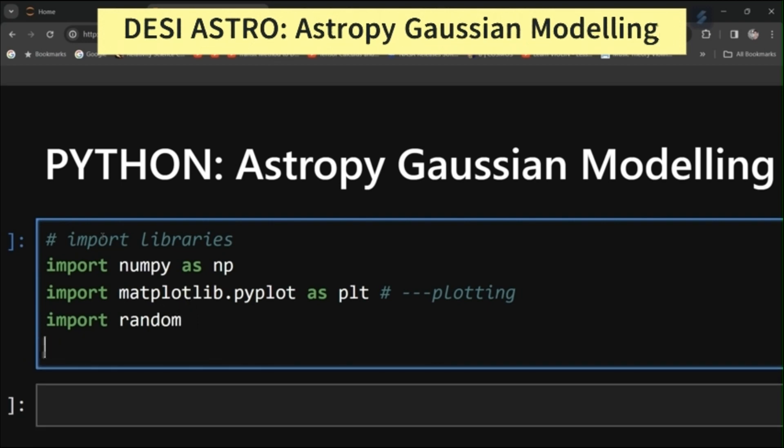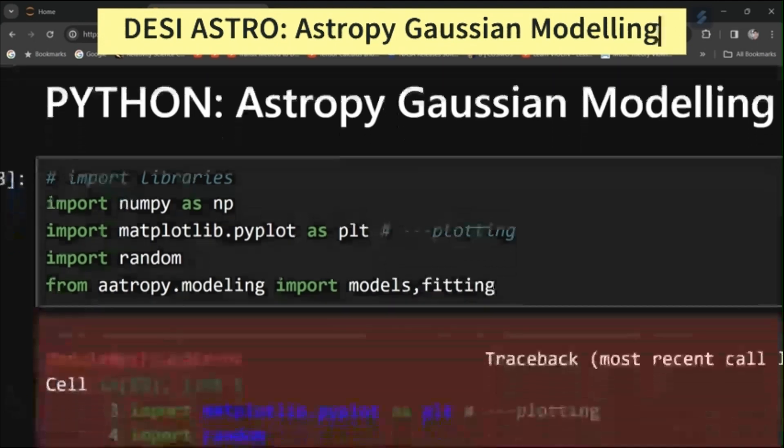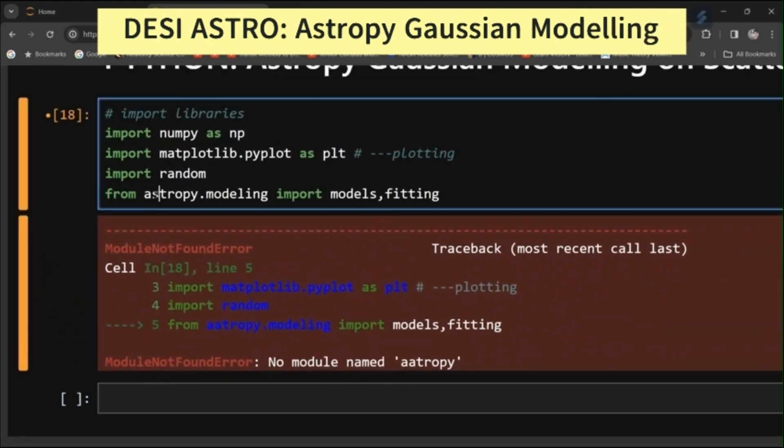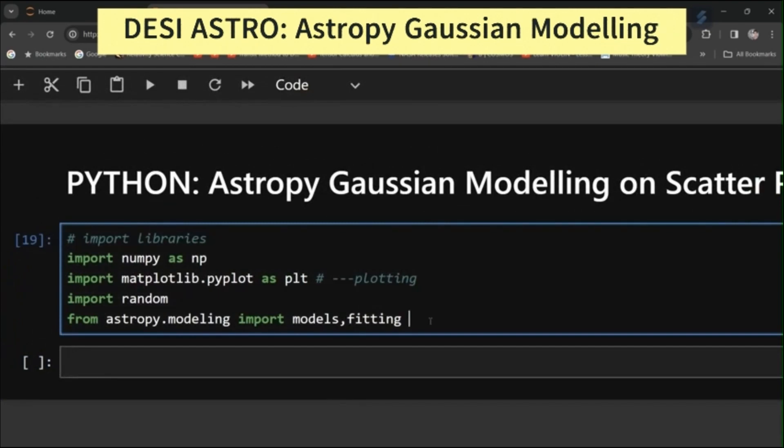And then I will import from AstroPy. From astropy.modeling import models, fitting. This will be used to fit Gaussian.